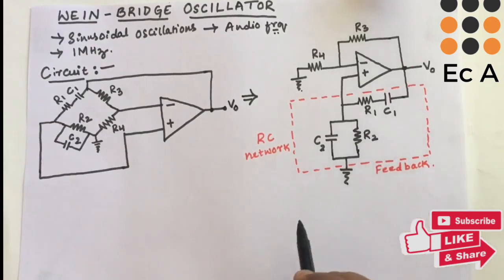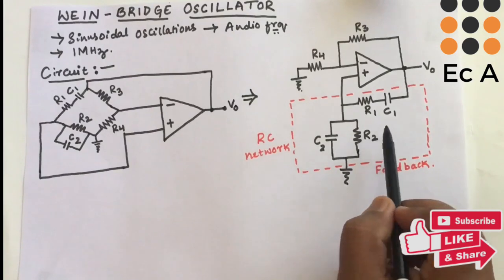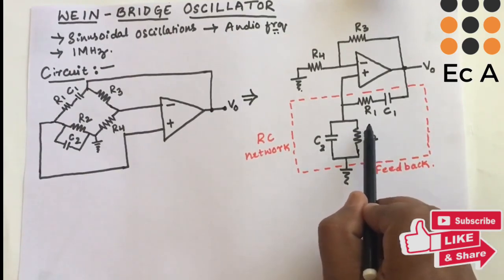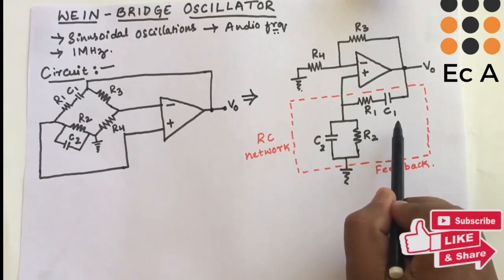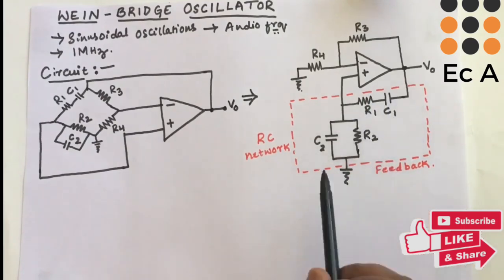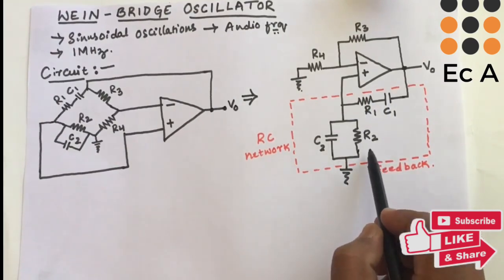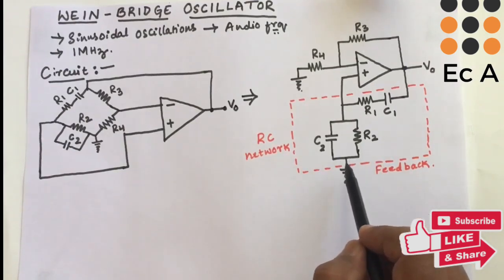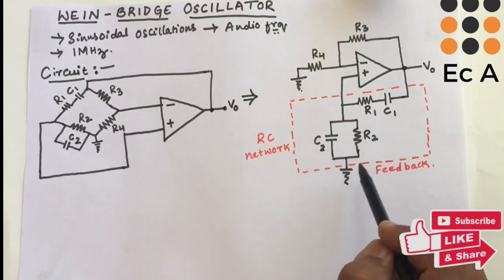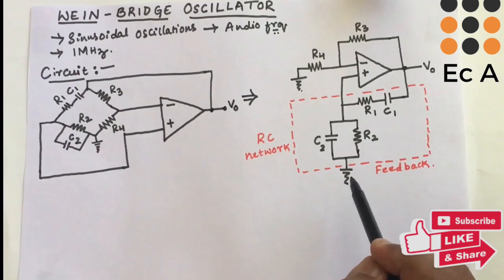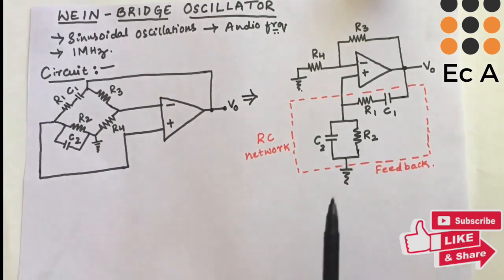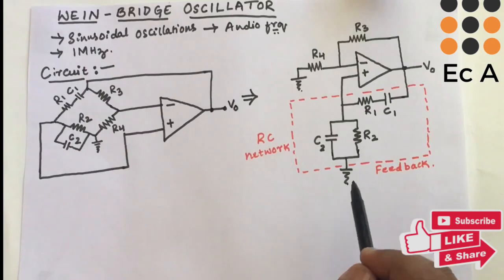In the RC network, the series combination of resistor R1 and capacitor C1 acts as a high-pass filter, and the parallel combination of resistor R2 and C2 acts as a low-pass filter. Hence the combination of the high-pass filter and low-pass filter will not allow low frequencies or high frequencies, but will allow only one intermediate frequency at the output.